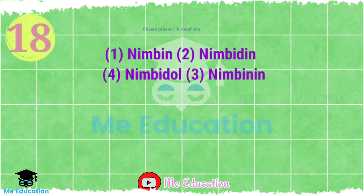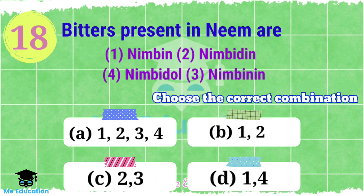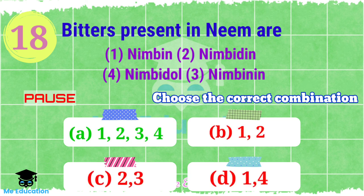Question number 18: The bitter compounds present in neem are — nimbin, nimbidin, nimbidol, and lianimbinin. Which one is responsible for the bitterness of neem? The right answer is Option A — all of them are responsible.